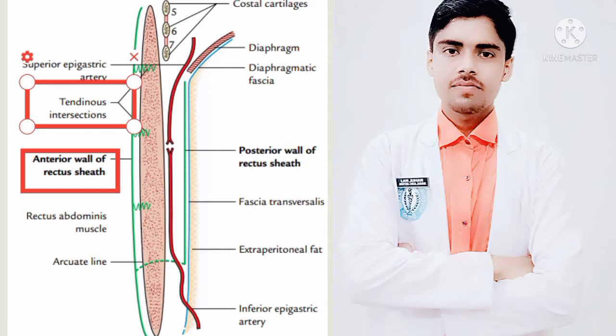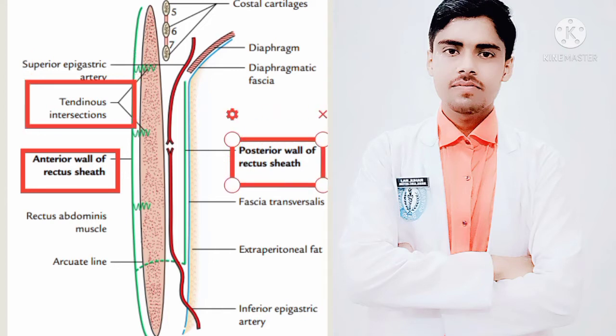Now we will discuss about the posterior wall of the rectus sheath. As you can see in the figure, this is the posterior wall of the rectus sheath. It is complete but is deficient above the costal margin and below the arcuate line, and it is free from the rectus muscle.